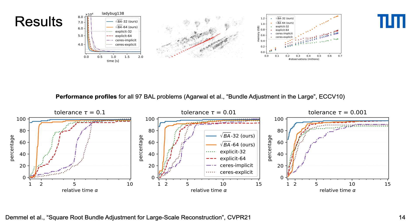In the shown performance profiles, a curve more to the left means faster runtime, and more to the top means better accuracy. For example, the single precision square root solver in blue is the fastest at reducing the cost to 10% for more than 90% of problems. Moreover, while the single precision Schur complement solver (the dashed green line) does not manage to solve all problems to high accuracy, the proposed square root approach in blue is on par with the double precision solver in orange.